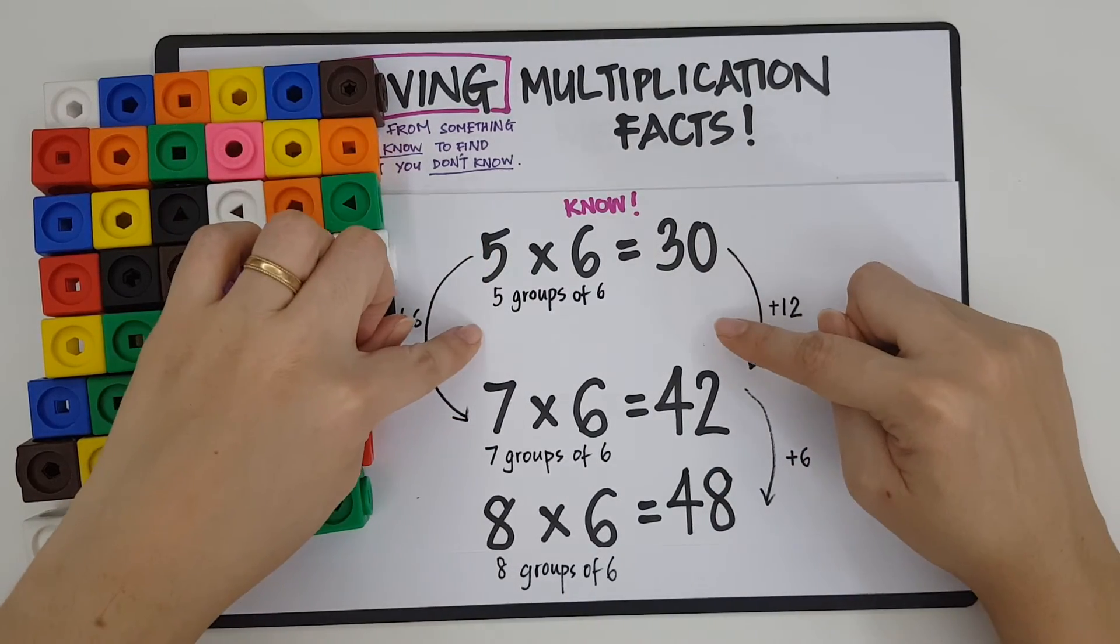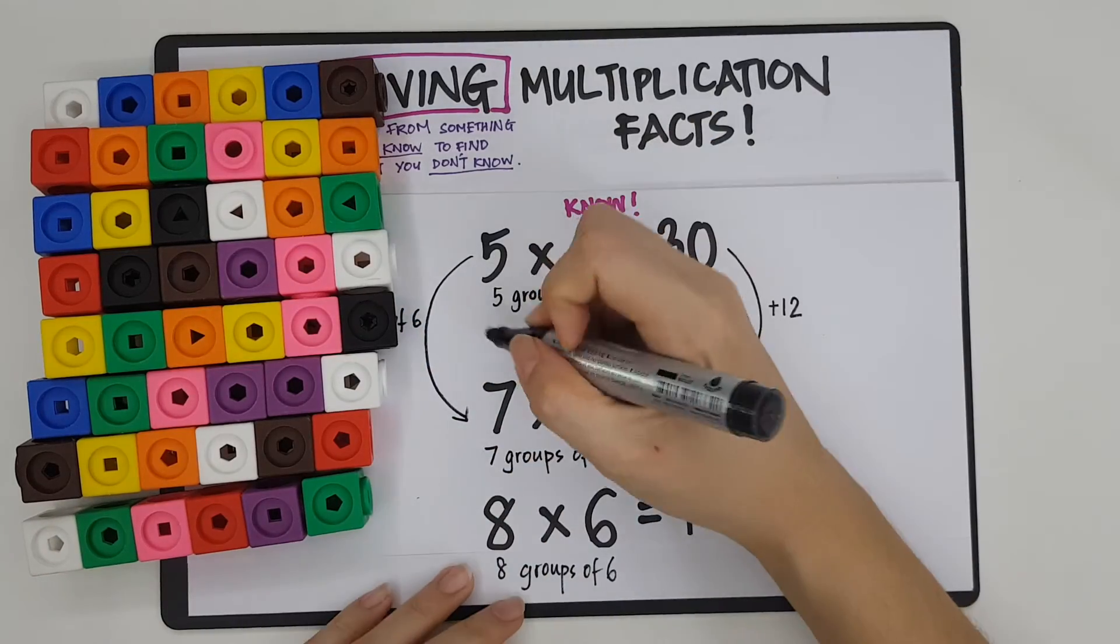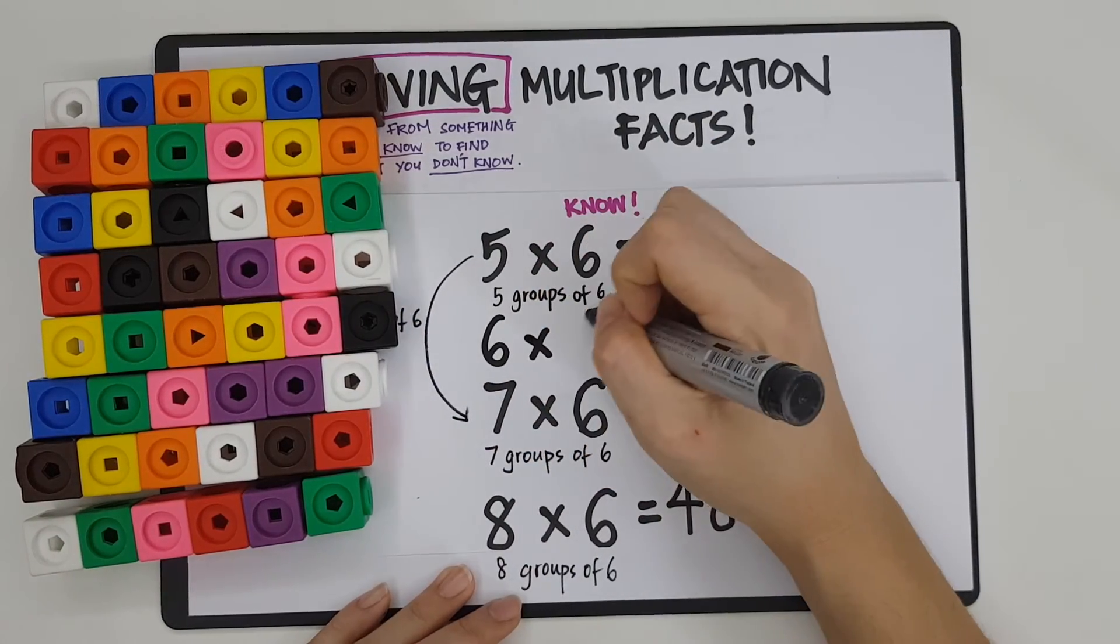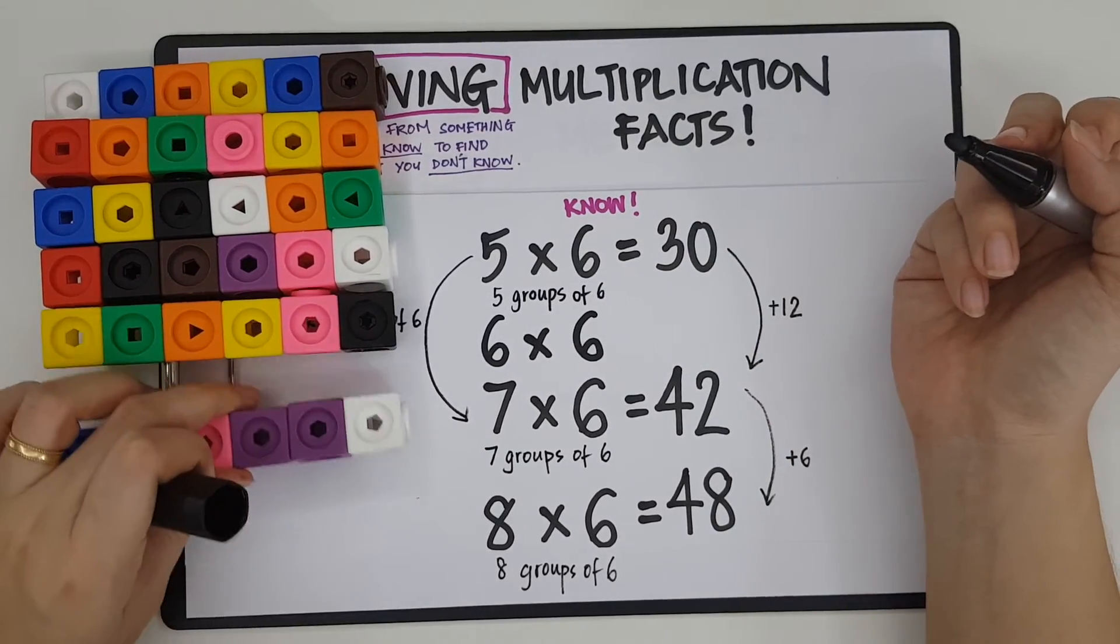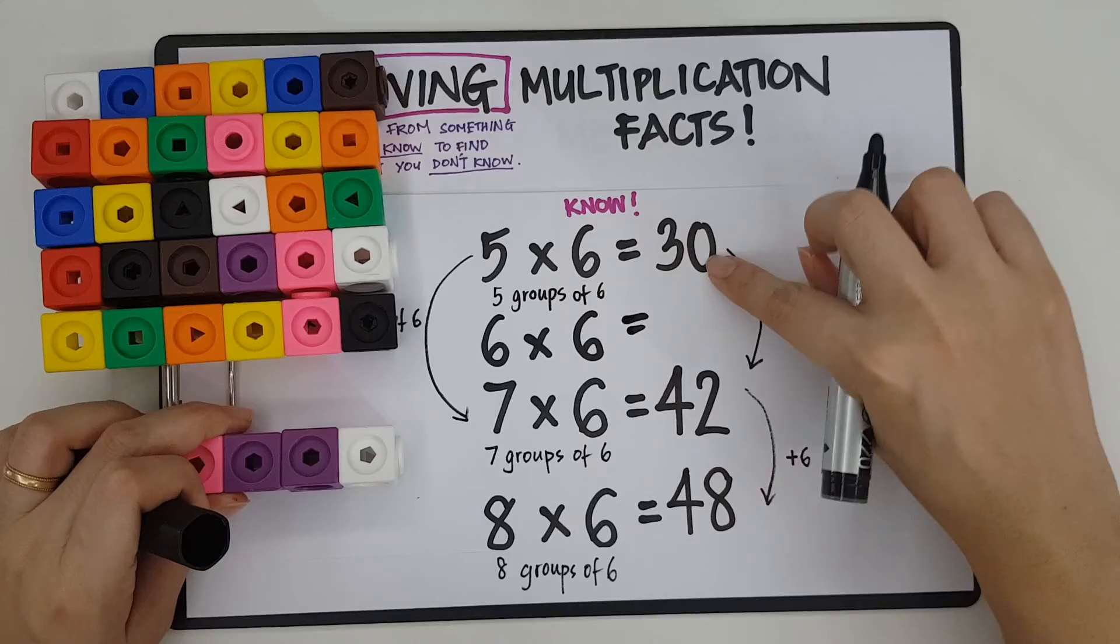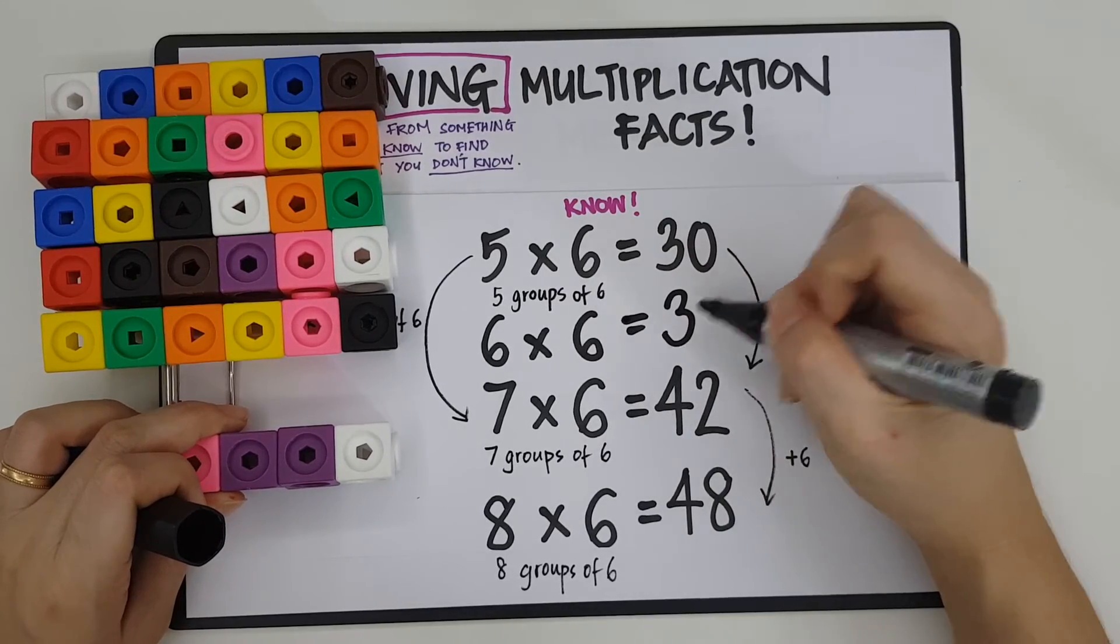I can even derive 6 times 6, right? By adding one more group of 6. 5 groups of 6 to 6 groups of 6 is just adding a 6. 36.